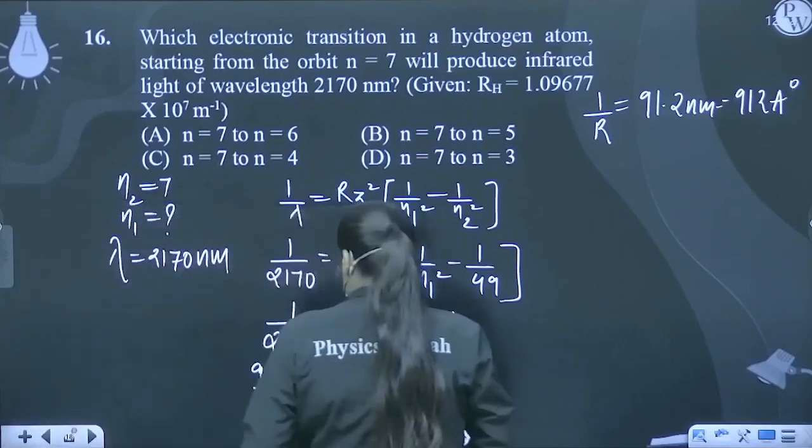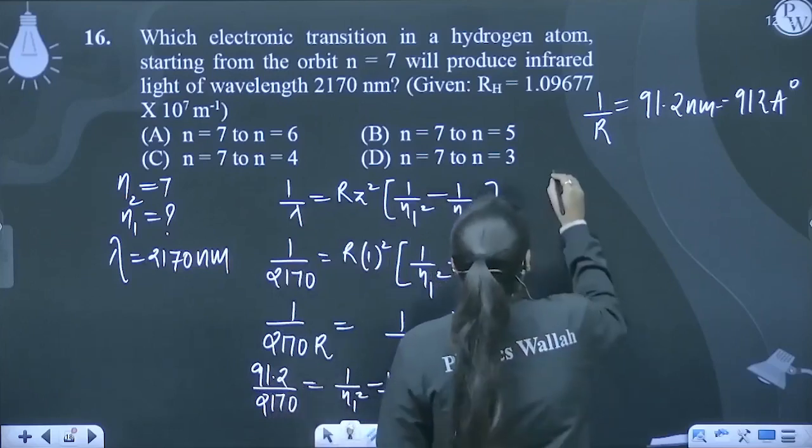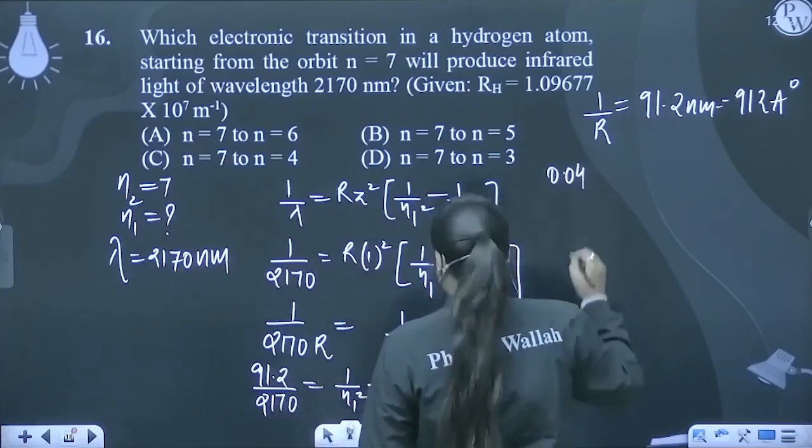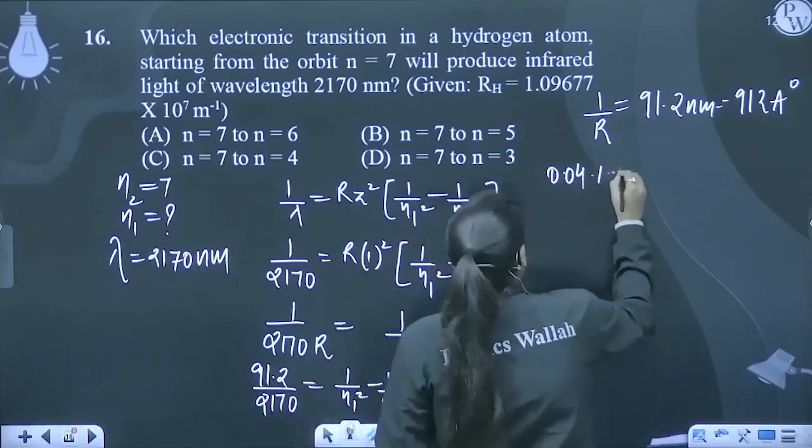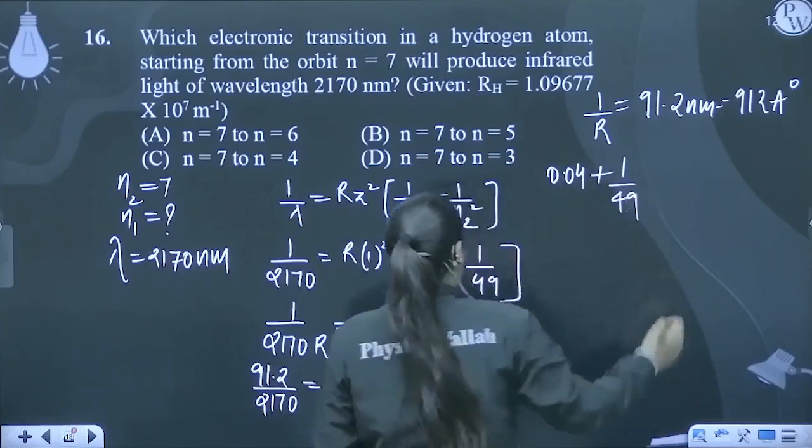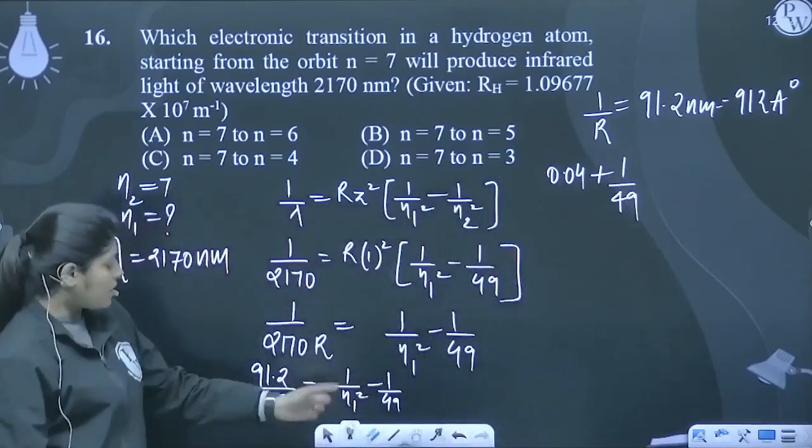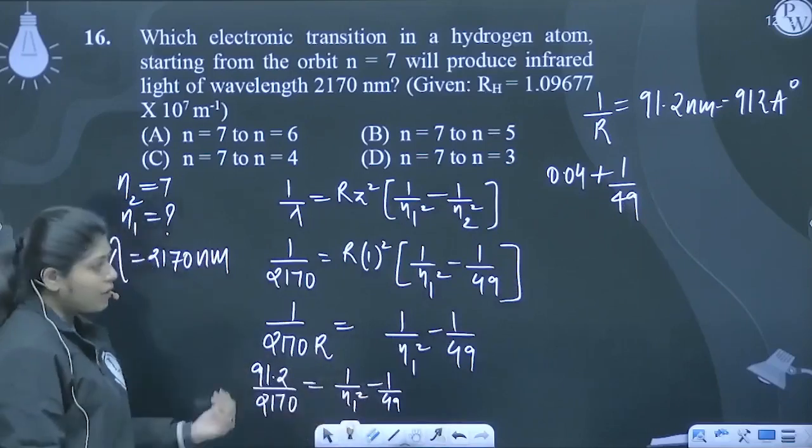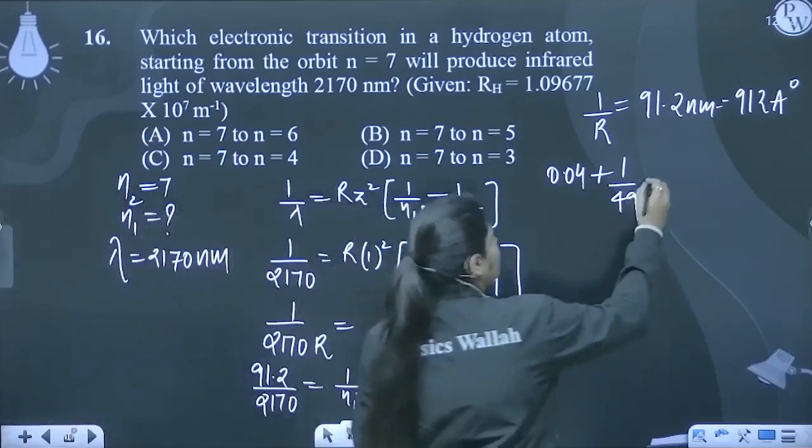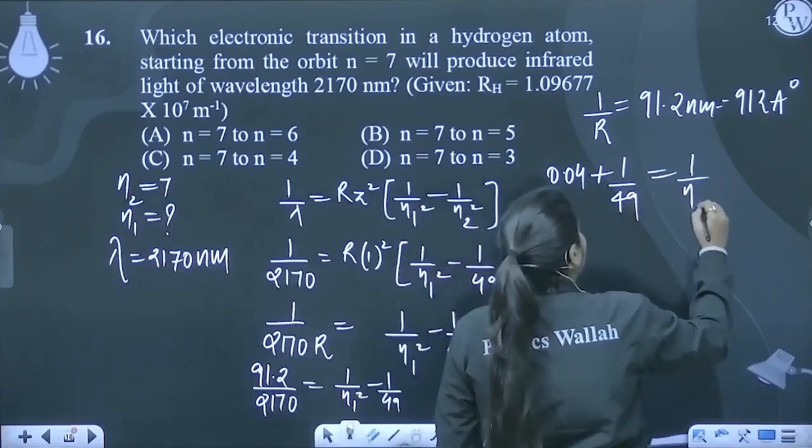Isko mein kya liek sakti ho? 91.2 upon 2170 jab karo ge aap, to kitna ae ga? 0.04. 1 upon 49 ko mein nahi idher shift kiya. Isko divide kiya, to approximately 0.04 aata hai. 1 upon 49 ko idher leker haahi. So, that equals 1 upon n2 ka square.